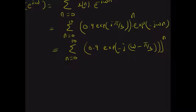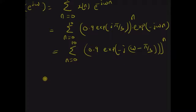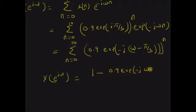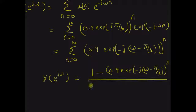So we can apply the sum formula for a geometric series, which makes the DTFT equal to 1 minus 0.9 * e^(−j(ω − π/3)) raised to the power 11, divided by 1 minus 0.9 * e^(−j(ω − π/3)). So this is the DTFT.